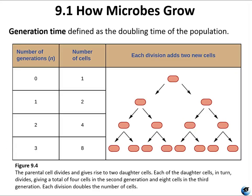The generation time is the doubling time for the population. Each cell begets two new cells, which also beget two new cells, so you have this exponential reproduction. The first generation you have one mother cell, then two daughter cells, then four, then eight — so from one cell you get fifteen cells in just three rounds of binary fission.